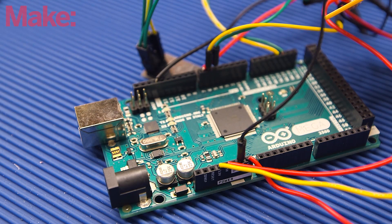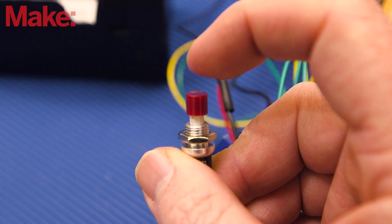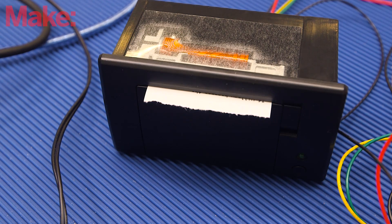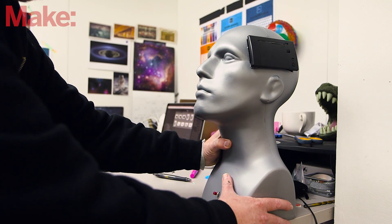At this point, the build should be functionally complete. Connect the power and push the button. A shower thought should be randomly pulled from the internet and printed out on the thermal printer. If everything works, stuff everything into the mannequin head and set it at your desk or anywhere you want to display it.